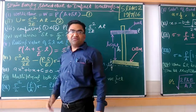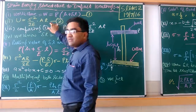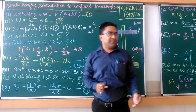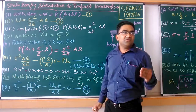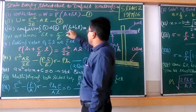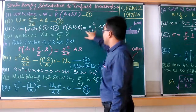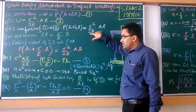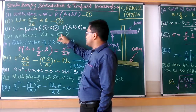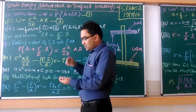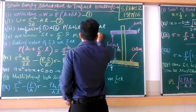Again we have the standard equation for strain energy: sigma squared upon 2E into A into L. The same step follows — comparing work done with strain energy. By comparing equation 1 and equation 2: P into (h plus delta) equals sigma squared upon 2E into A into L. We also know that delta L equals sigma upon E into L, or equivalently delta L upon L equals sigma upon E, which represents strain.